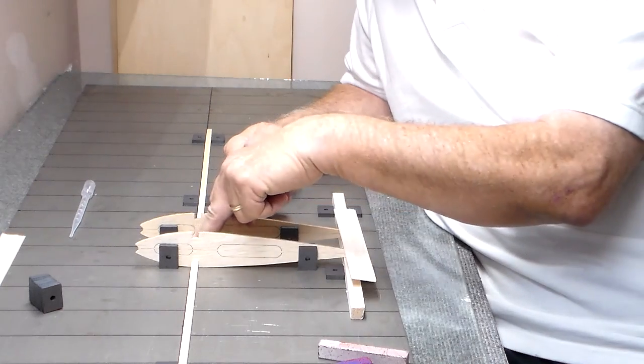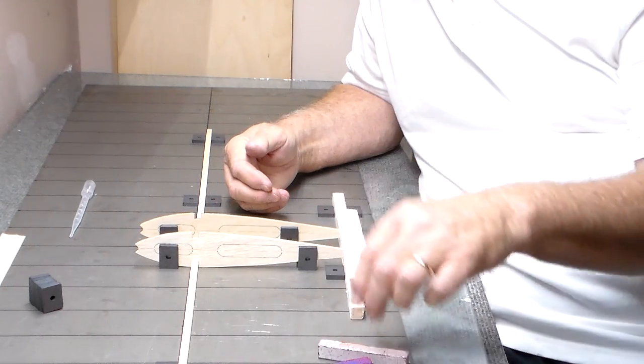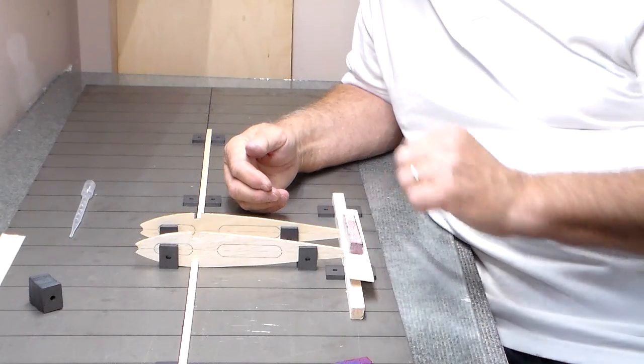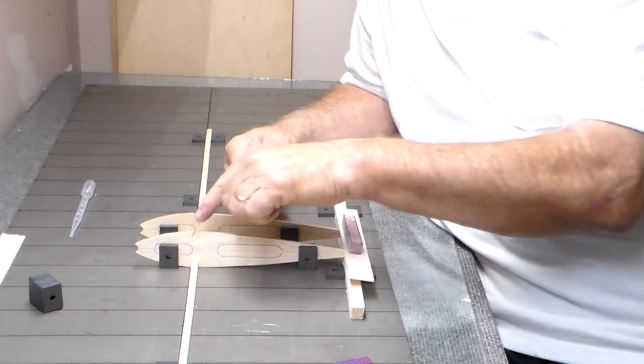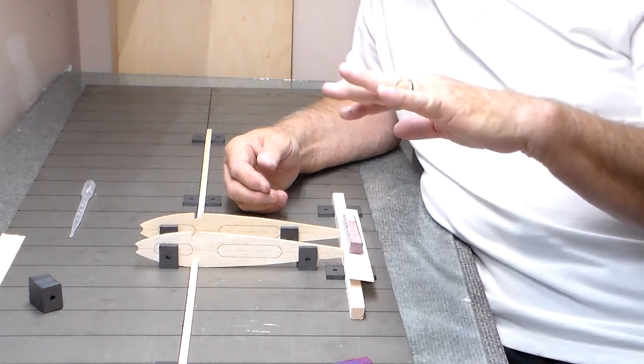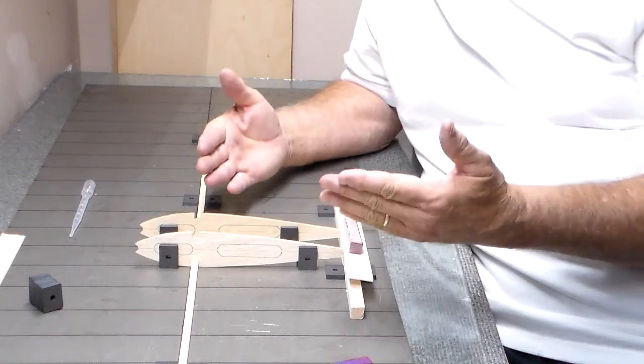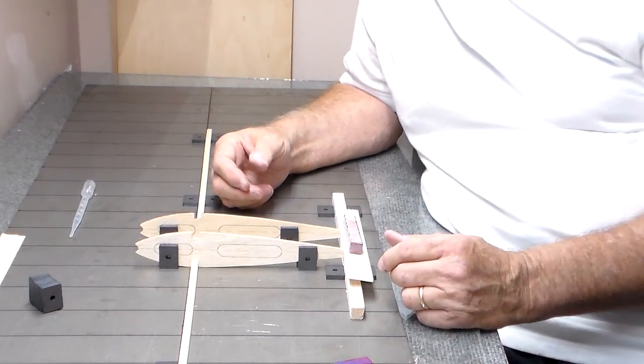I've got one spar in and then I've got one at the top half of the trailing edge sheeting on. Then I'll go back and put the top spar in, flip the wing over, and then all you've got to do is put on your other side of trailing edge.